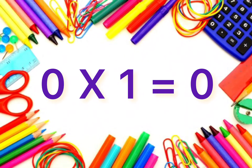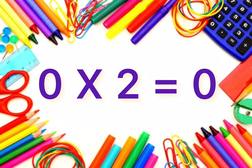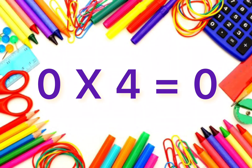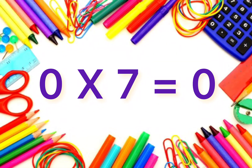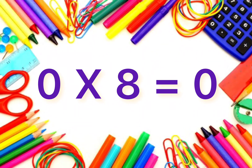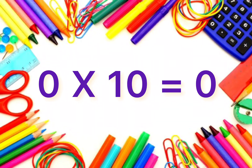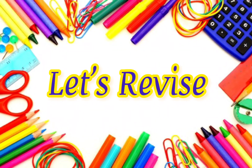Table of 0. 1s are 0, 2s are 0, 3s are 0, 4s are 0, 5s are 0, 6s are 0, 7s are 0, 8s are 0, 9s are 0, 10s are 0. Let's revise it once again.